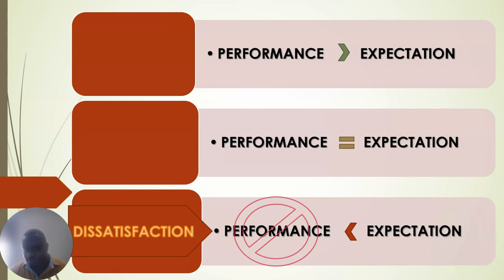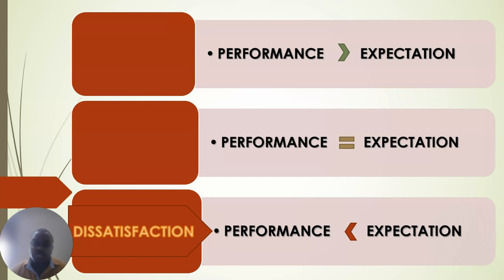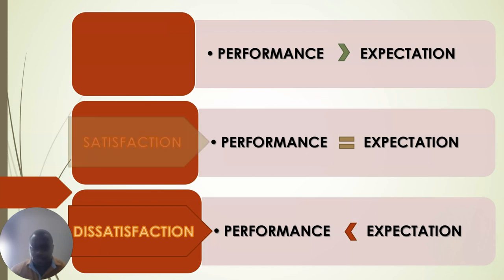The next stage moves away from the red: when performance is equal to the customer's expectation. For instance, I apply for an internet service expecting it installed and working at 20 Mbps by 12 noon — and exactly at 12 noon it is. Or I go to the bank expecting a transfer within 24 hours and it's done within 24 hours. When my expectation is met, I'm satisfied. This satisfaction equation is the least we require in customer service.